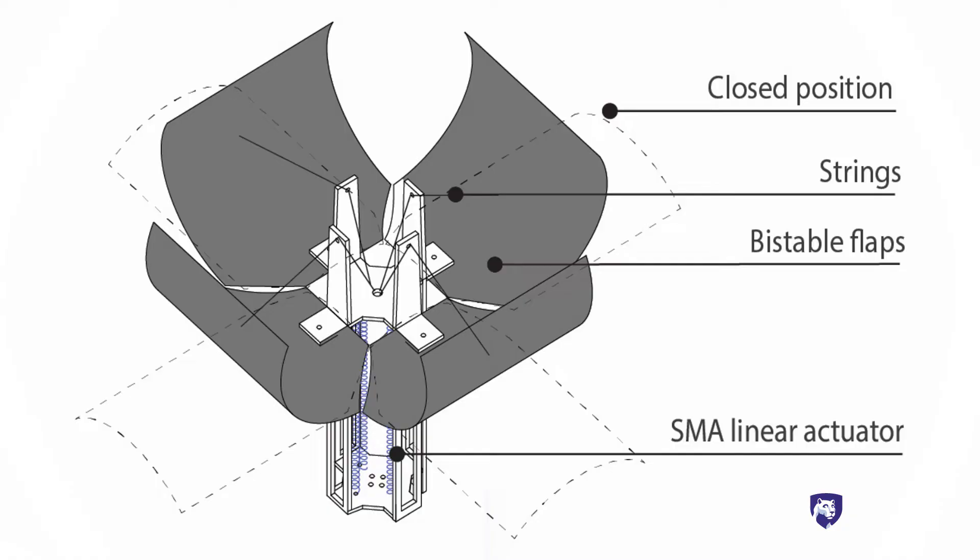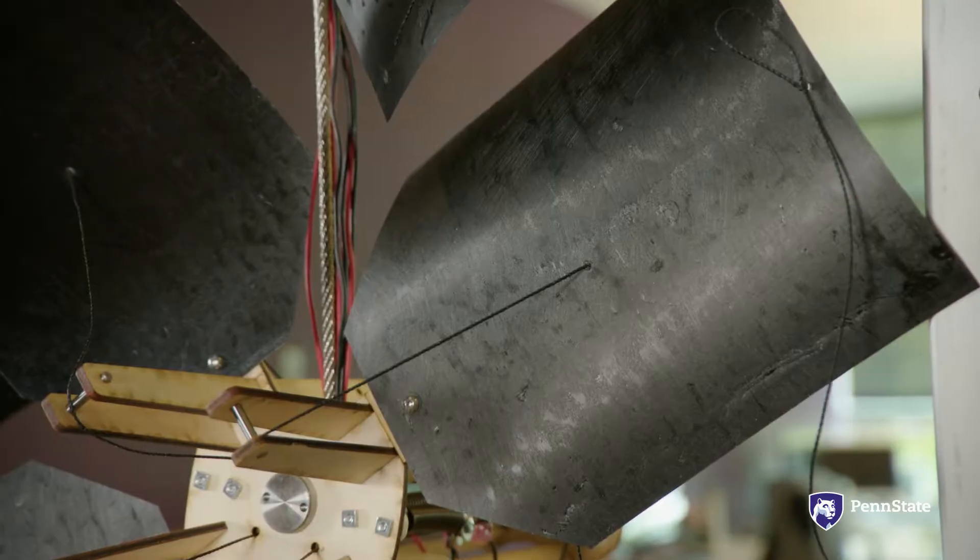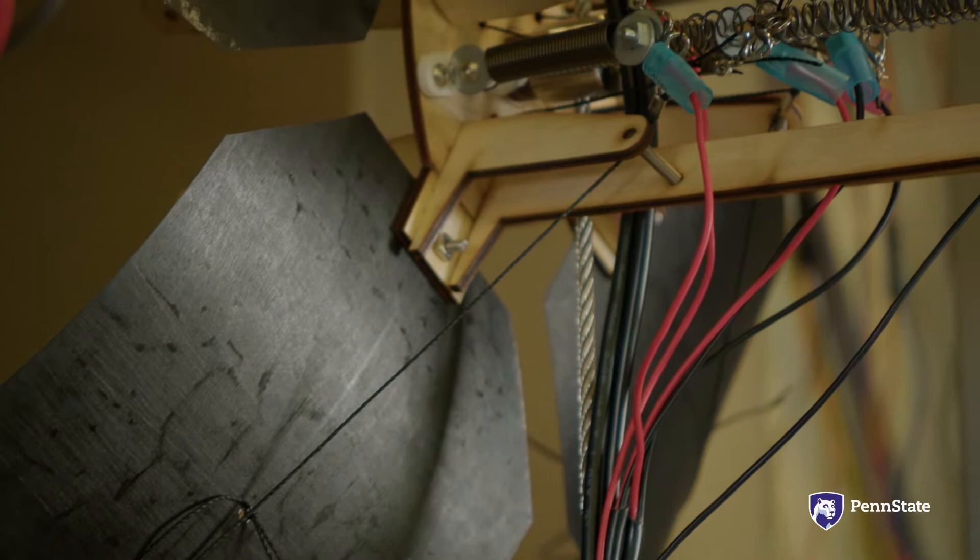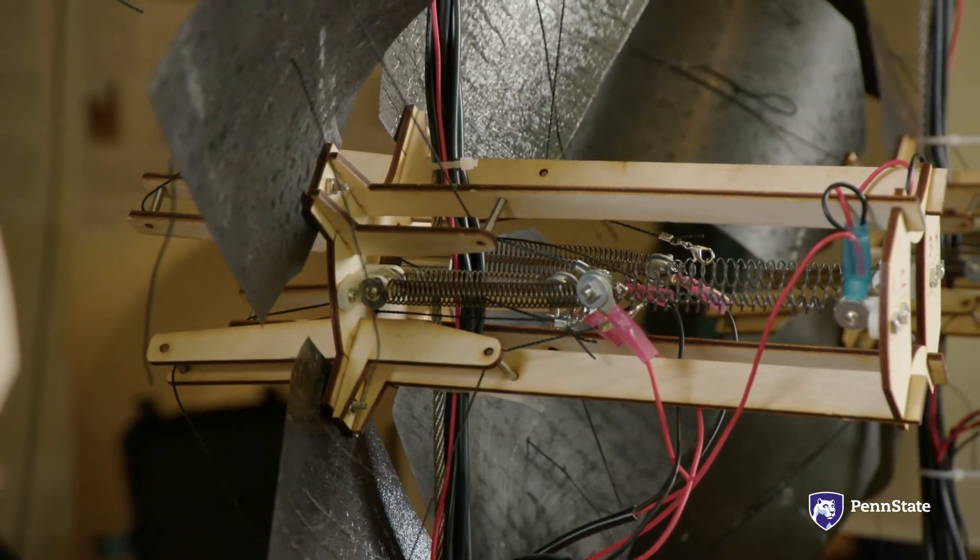The units include a holder with four bi-stable flaps, which transition between open or closed positions. These bi-stable flaps are connected to strings that are pulled using a shape memory alloy spring that contracts when heated, thereby opening and closing the flaps.